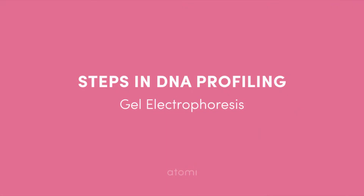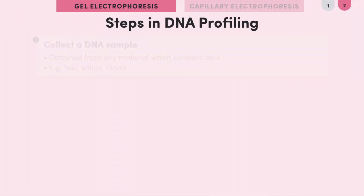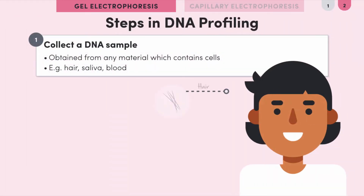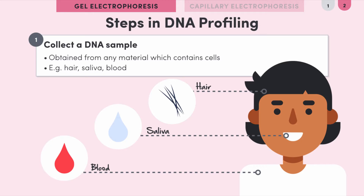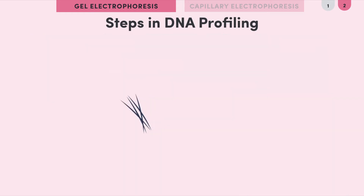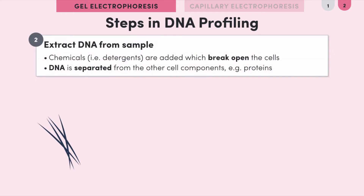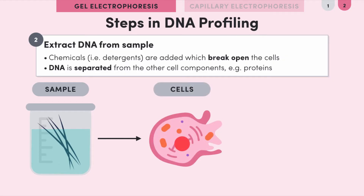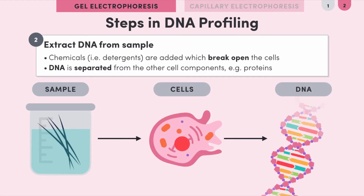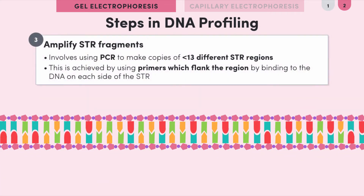One kind of DNA profile is produced using gel electrophoresis. First, we collect a DNA sample — this might be hair, saliva, blood, etc., basically anything which contains cells which contain DNA. Second, we extract the DNA from our sample; chemicals such as detergents are added to break open the cells and separate the DNA from other cell components like proteins. Then we use PCR to amplify the DNA of up to 13 different STR regions from the sample.